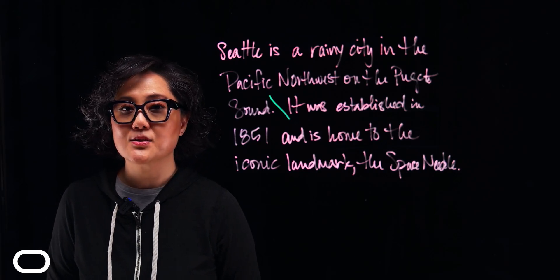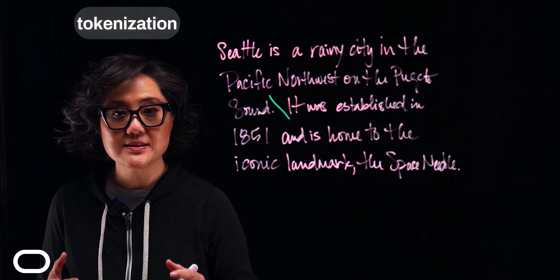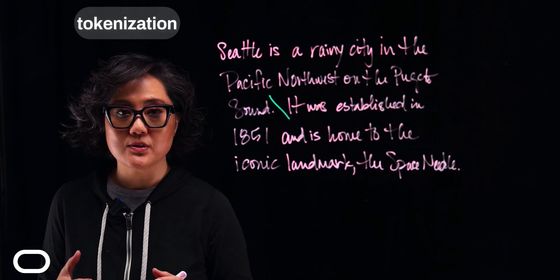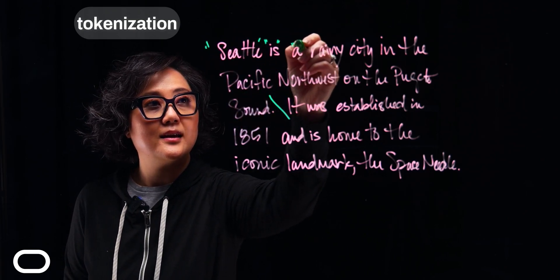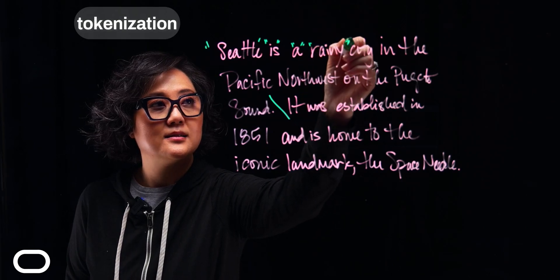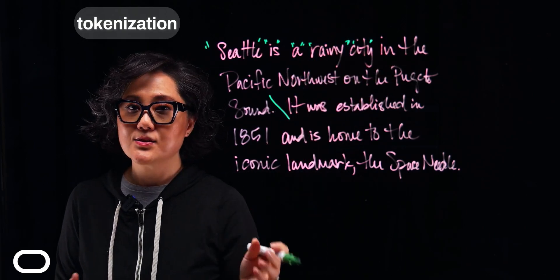The next step is tokenization. It breaks down the text into even smaller units like words. Seattle is a rainy city, and so forth.